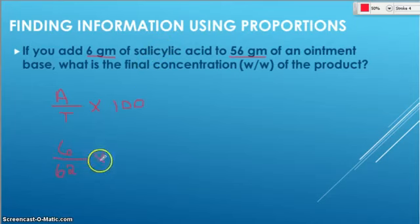And then we're going to multiply by 100. So again, make sure you're putting this in your calculator. 6 over 62. So 6 divided by 62. And then times 100. And I'm just going to round to the nearest tenth. So this is going to be 9.7%. So 9.7% is the strength or concentration of this mixture. Active ingredient over total times 100.